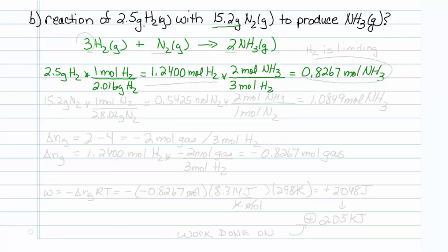Now, let's look at the nitrogen. We have 15.2 grams of nitrogen. One mole of nitrogen is 28.02 grams of nitrogen. Dividing this out, we determine that we have 0.5425 moles of nitrogen.